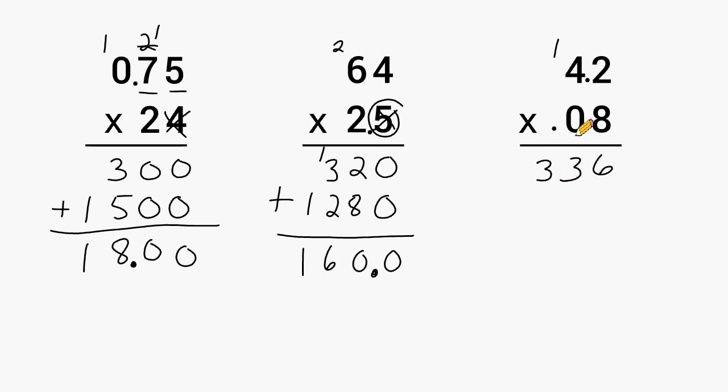And the next digit is a 0, so we do not have to multiply this by anything because we would just have a bunch of 0s and there's no point in adding nothing to 336.